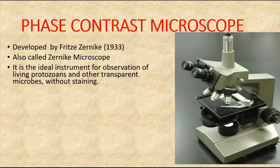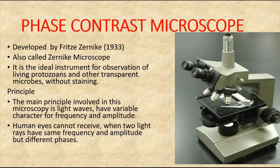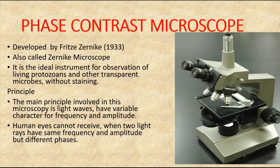The phase contrast microscope is considered an ideal instrument for observation of living protozoans and other transparent microbes without staining. The main principle involved in this microscopy concerns light waves, which have variable characters of frequency and amplitude. The human eye cannot perceive differences when two light waves have the same frequency and amplitude but different phases. To understand amplitude and frequency, we must first understand what happens to rays when they pass through a transparent object.